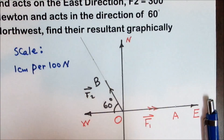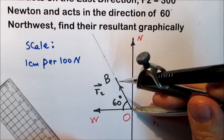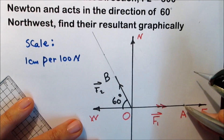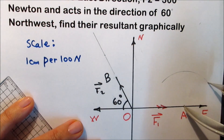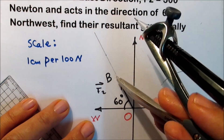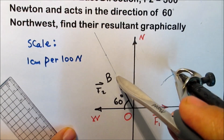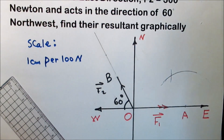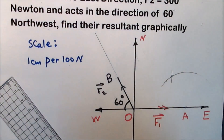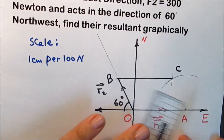To find the resultant, we need to complete the parallelogram. The easiest way is to use a compass. Open the compass to the length of OA, fix the pointer at B, and draw the first arc. Then open the compass to the length of OB, fix the pointer at A, and draw a second arc to cut the first arc at a point. This intersection is point C of the parallelogram. Now connect BC and connect AC to complete the parallelogram.